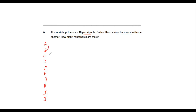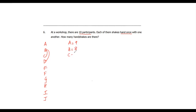Now what about B? B will not shake hands with A again because A already shook hands with B. So B will do it with C, D, and so on — that's 8 handshakes. Similarly, C will do 7, D will do 6, E will do 5, F will do 4, G will do 3, H will do 2, and I will do only 1 because I shakes hands with J. J cannot go back and shake hands again. So the number of handshakes are 9, 8, 7, 6, 5, 4, 3, 2, 1.